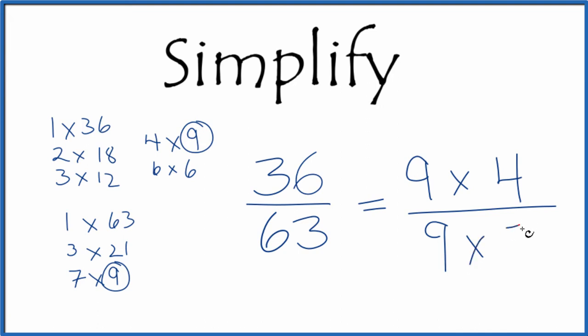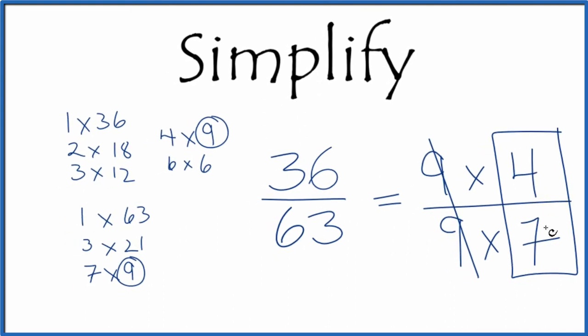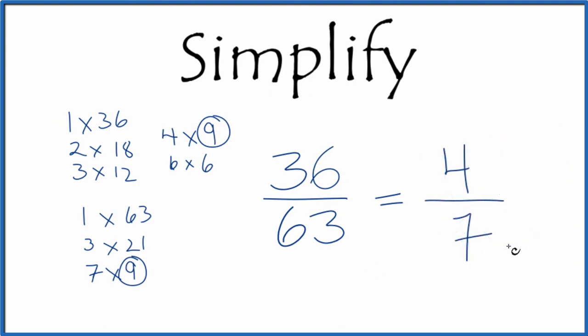Since we have 9 on the top and the bottom here, cross that out. We're left with 4/7. So we've simplified 36 over 63 down to 4/7, and these are equivalent fractions.